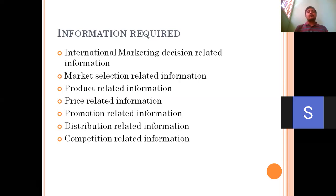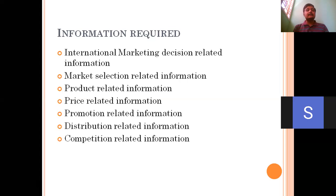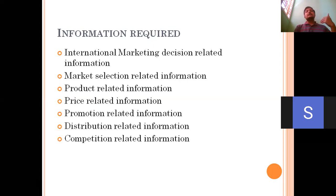Take another example: the jewelry segment. A brand like Joy Lucas recently entered India — can they make branches in all district places across India? No, that's the wrong decision. Whatever designs they create, the selling may not work out in all district places. This is how we need to start collecting and gathering information about a particular market.